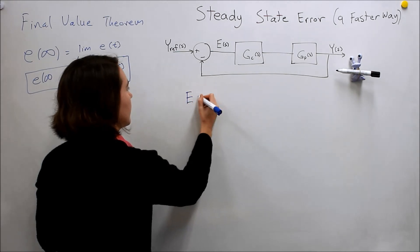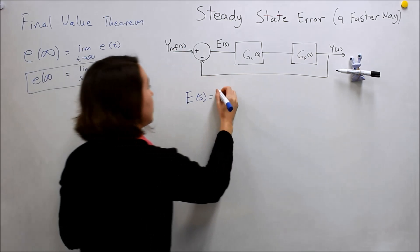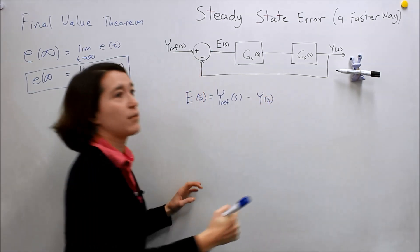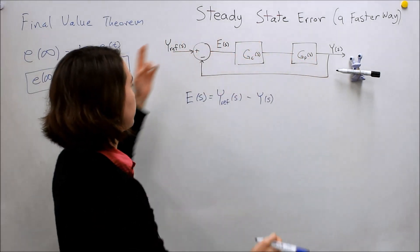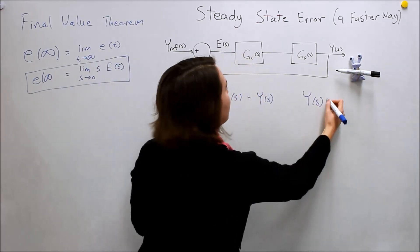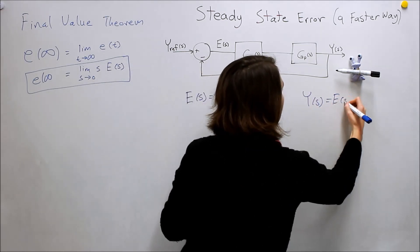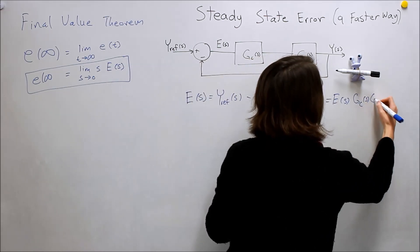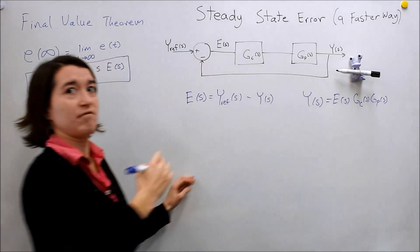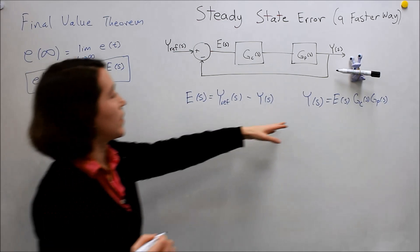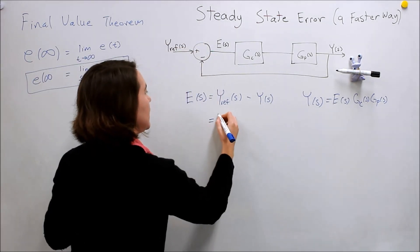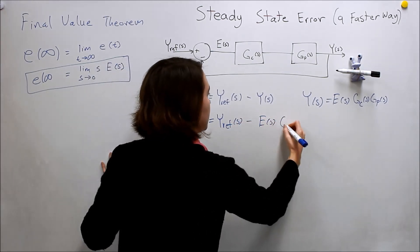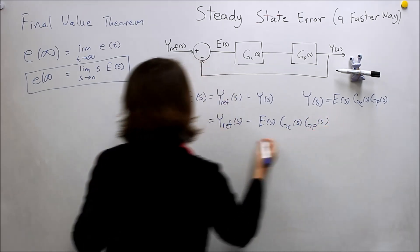So we know that e of s is equal to, it's defined by y ref of s minus y of s. And we know that y of s, based on this feedback loop, I'll write it here, y of s is equal to this error originally times these two plant functions, transfer functions, gc of s and gp of s. Right? So then, we can plug this back into here, and we can get e equals y ref of s minus this whole expression, so e of s, gc of s, gp of s.